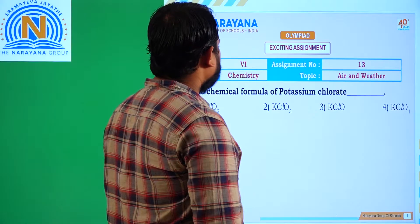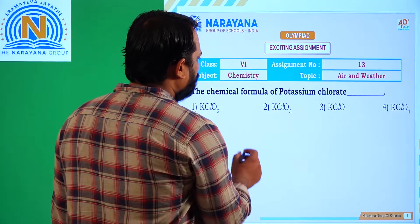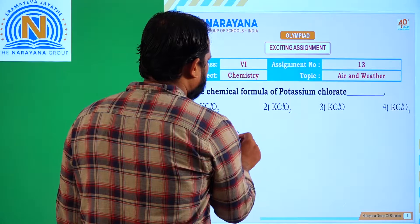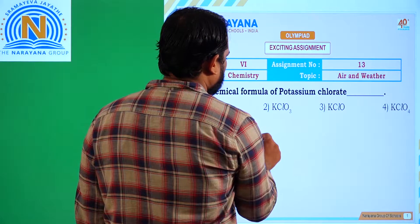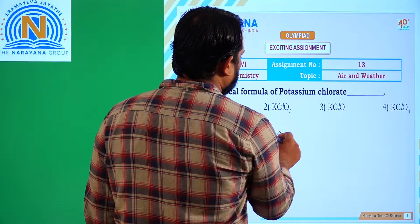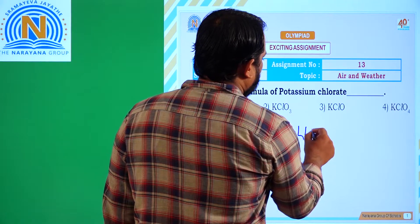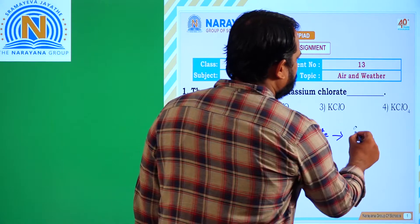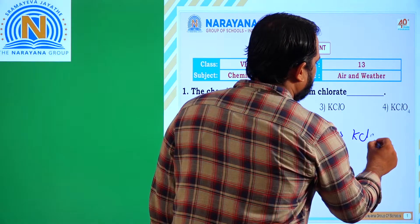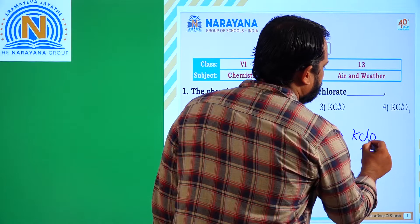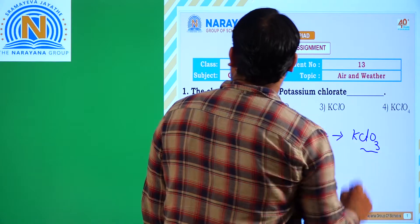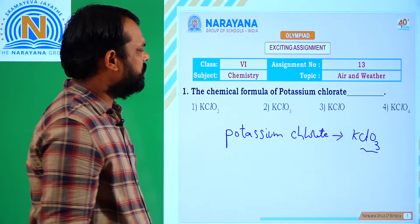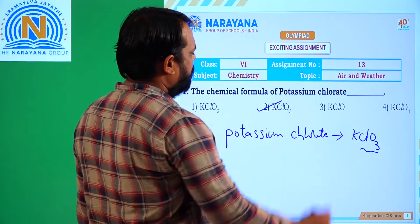In this, the first question is the chemical formula of potassium chlorate. Generally, potassium chlorate formula is KClO3. Which is the option? Second one is the correct option.